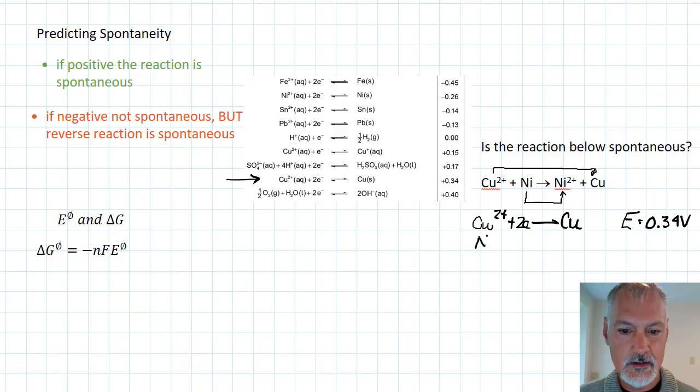The other reaction, I have nickel producing two electrons and turning into nickel ions. This is the reverse of the reaction as described up here. So as a result, that energy associated with it would be 0.26 volts.